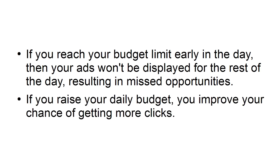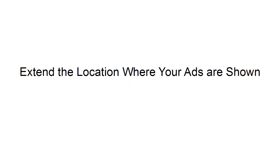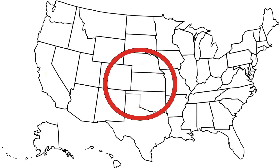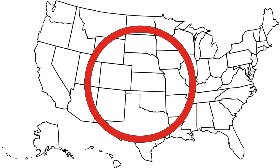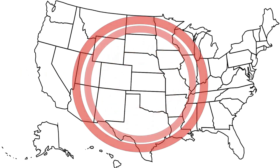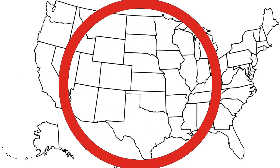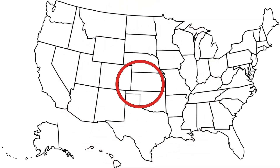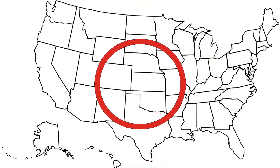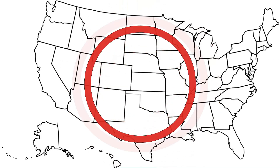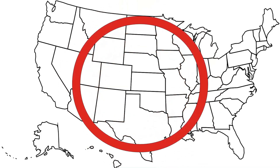If you raise your daily budget, you improve your chance of getting more clicks. Extend the location where your ads are shown. The location setting of your campaign will determine the location of the people who see your ads. Expanding the target geographic area can help to increase the size of the audience that sees your ads. This will immediately increase the number of clicks that you receive from your ad campaign.